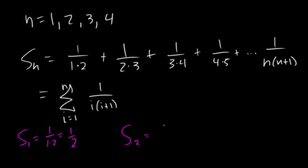If we sum it to the second term, we're going to get the first two which is going to be 1 half plus 1 sixth. We get common denominators. We end up with 3 sixths plus 1 sixth which gives us 4 sixths which ends up being 2 thirds.